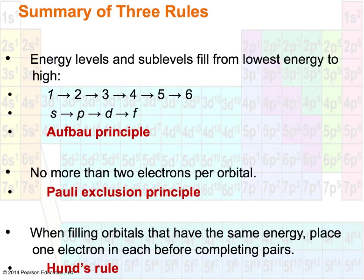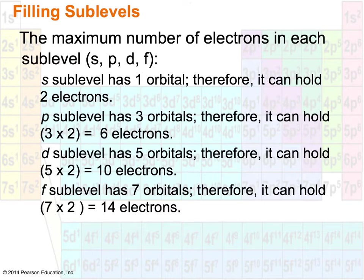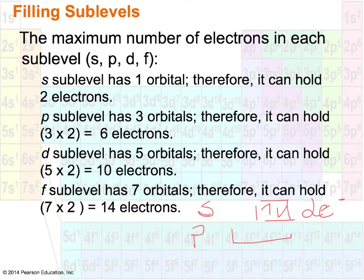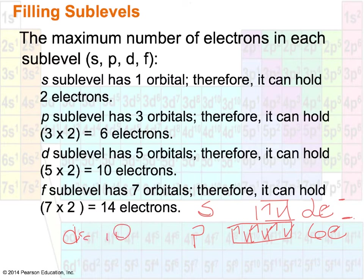If you like to see all the rules in one place, those three rules are summarized together. As a reminder: an S sublevel has one orbital and can hold a maximum of two electrons. A P sublevel contains three orbitals, so it can hold a maximum of six electrons. A D sublevel can hold a maximum of 10 electrons, and an F sublevel can hold a maximum of 14 electrons. That'll be important in our electron configurations.